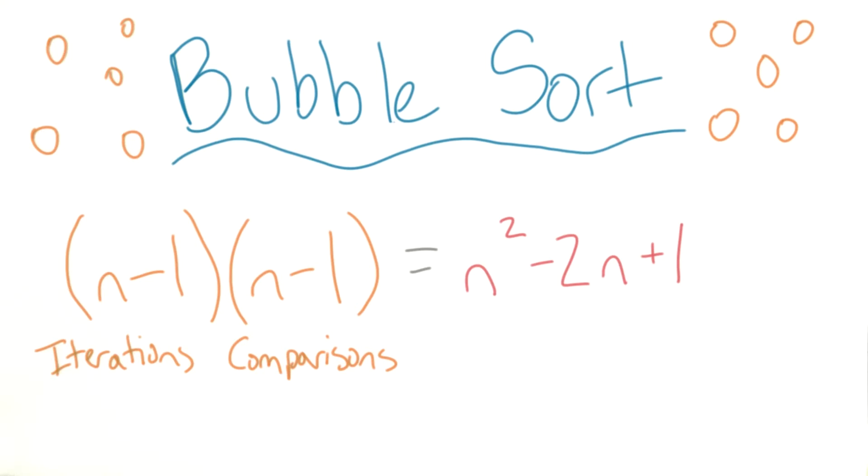Again, don't worry too much if you can't do the algebra. The minus 1 isn't changing much for us. So you could always just do n times n equals n squared.